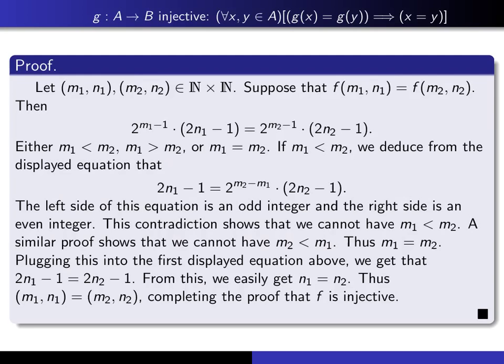Okay, so here's my proof. On the top I've reminded you what it means to say that a function is injective. You have to begin by giving yourself two points in the domain, so I say: let (m1, n1) and (m2, n2) be two points in our domain ℕ×ℕ. And I assume that the values of the function at those two points are the same — suppose f(m1, n1) equals f(m2, n2) — which means 2^(m1-1)(2n1-1) = 2^(m2-1)(2n2-1).